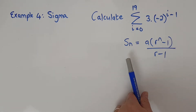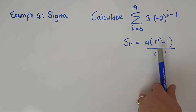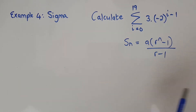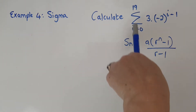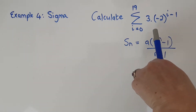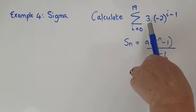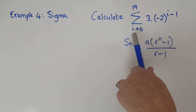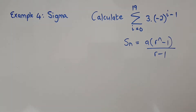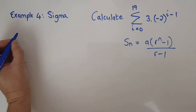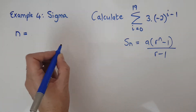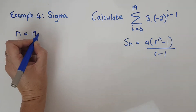I don't have a, I don't have n, I don't have r — I've got absolutely nothing. Got to start somewhere. They're basically saying calculate the sum to a number of terms. The 19 and the zero are the key: top minus bottom plus one gives me n. So n is going to be 19 minus 0 plus 1, which is 20. I've got n equals 20.